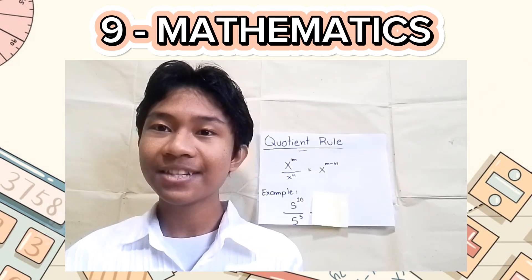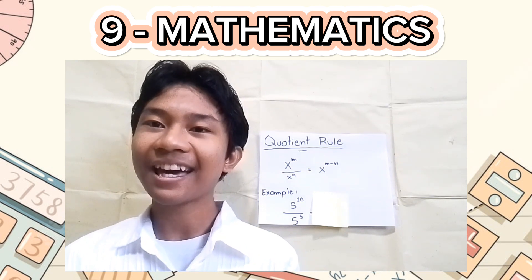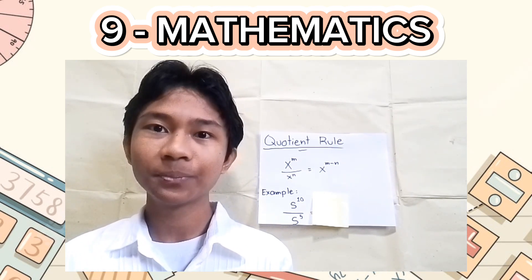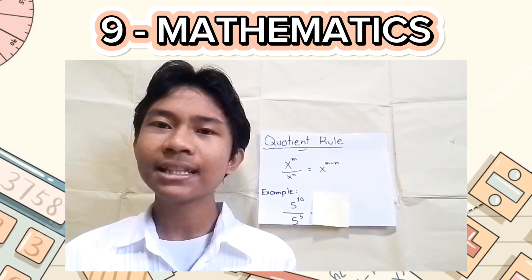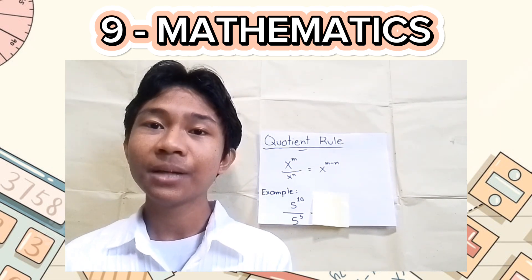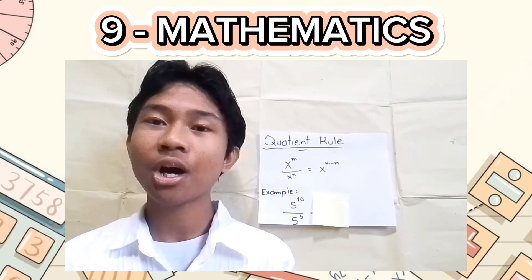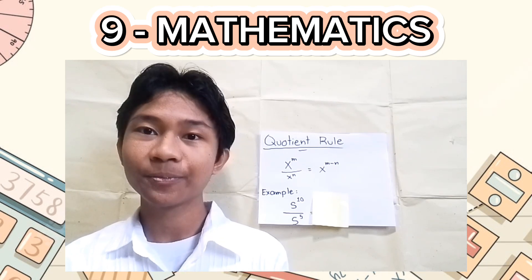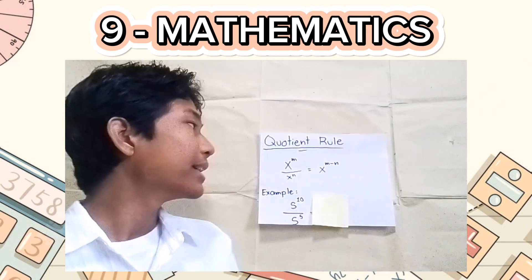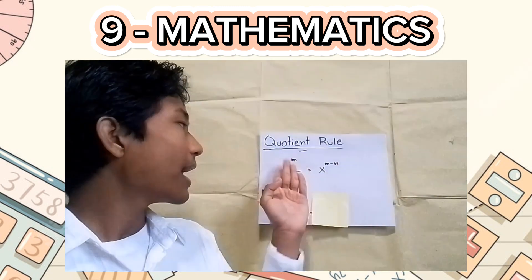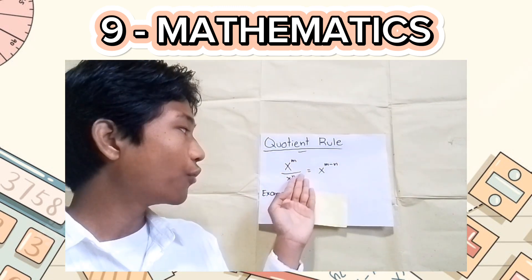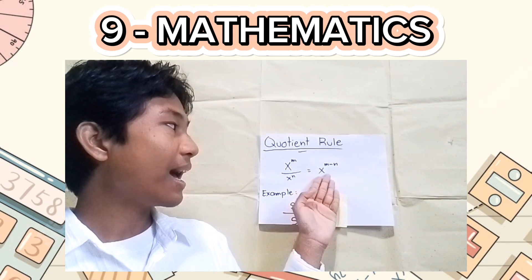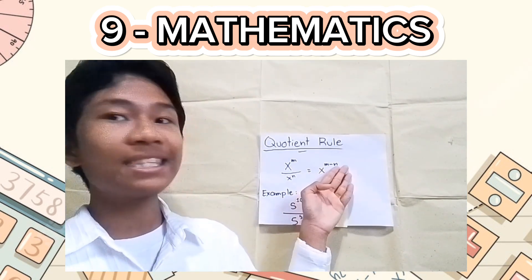Product rule is pretty easy, right? Now let us move on to the next law. Here we have the quotient rule. Quotient rule is basically the opposite of the product rule because in this law, we will simply just subtract the exponents of the same variable. Here we have x raised to m over x raised to n is equal to x raised to m minus n.